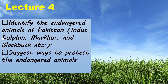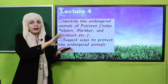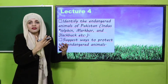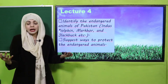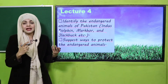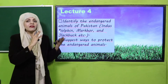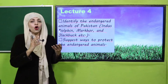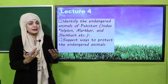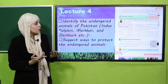In lecture number four, all the students will be able to identify the endangered animals of Pakistan — such as the dolphin, marhorn, and black bucks — and suggest ways to protect them. We will discuss how human activities and destruction of the environment have threatened wildlife, causing many animal species to become endangered. Pages included are page number 31 and page number 32.